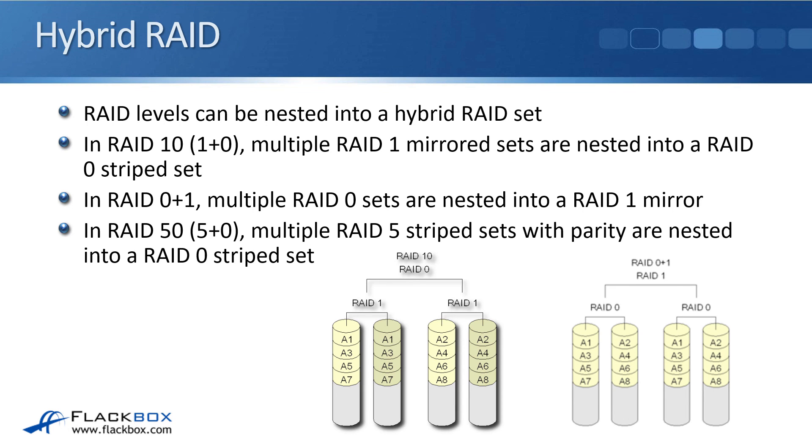The last types we've got are hybrid RAID. With hybrid RAID, the different RAID levels can be nested into a hybrid set. So some examples of hybrid RAID. In RAID 10, that's RAID 1 plus 0, you've got multiple RAID 1 mirrored sets are nested into a RAID 0 stripe set. So that gives you a good balance of redundancy and performance. With RAID 0 plus 1, that's the other way around, where multiple RAID 0 sets are nested into a RAID 1 mirror.